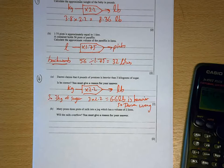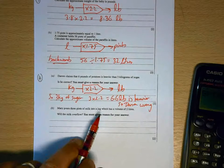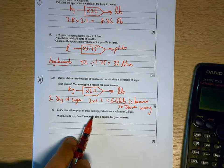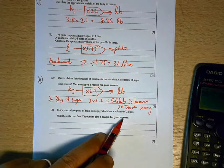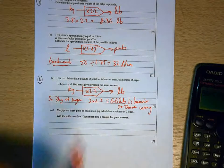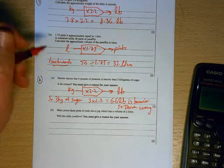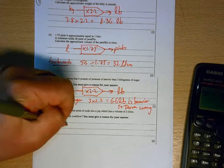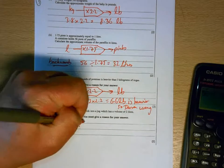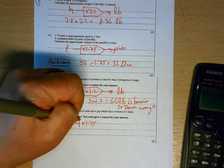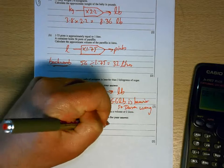And Mary pours three pints of milk into a jug which has a volume of two liters. So here we're having to recall the relationship between pints and liters. As you can see, a different question in a different year, they actually give you that. So liters multiplied by 1.75 will give you pints.